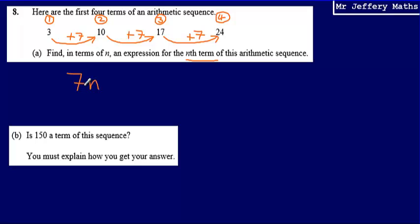If I look at the second term, 7 multiplied by 2 gives me 14, so that isn't correct either. What am I going to have to do to 7n to get to the numbers in my sequence? Hopefully you can see that I'm going to have to subtract 4. I can quickly check — does this now work? 7 multiplied by 1 gives me 7, minus 4, gives me the first term, which is 3.